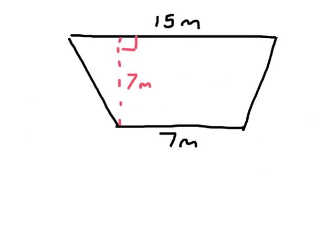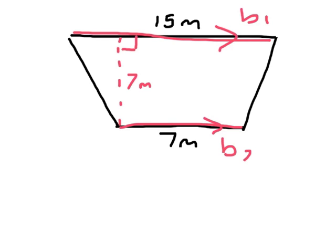Here's a trapezoid. We know it's a trapezoid because it has two parallel sides that go in the same direction. Those are the two bases — this can be base one, and this can be base two. It doesn't matter which one it is; all you're going to do is add them up, so just make sure one is base one and one is base two.